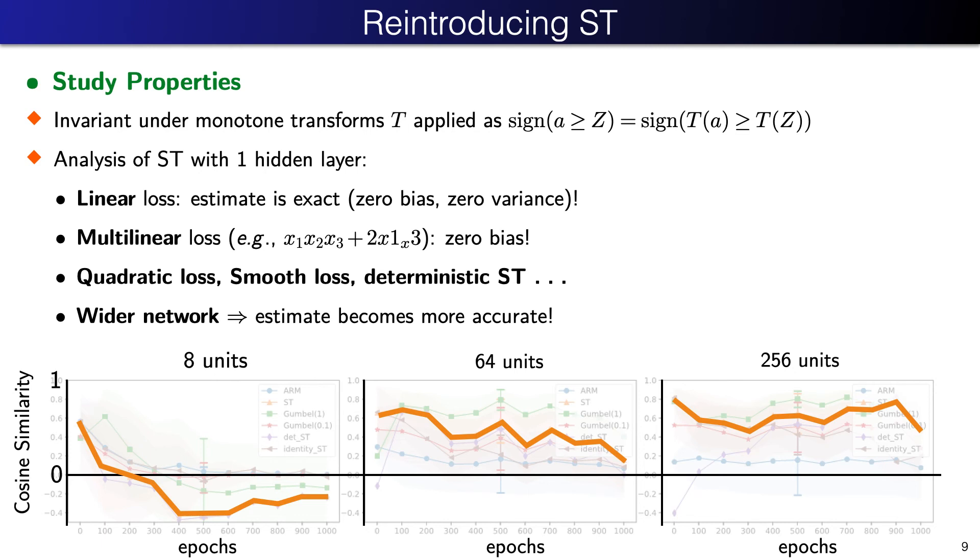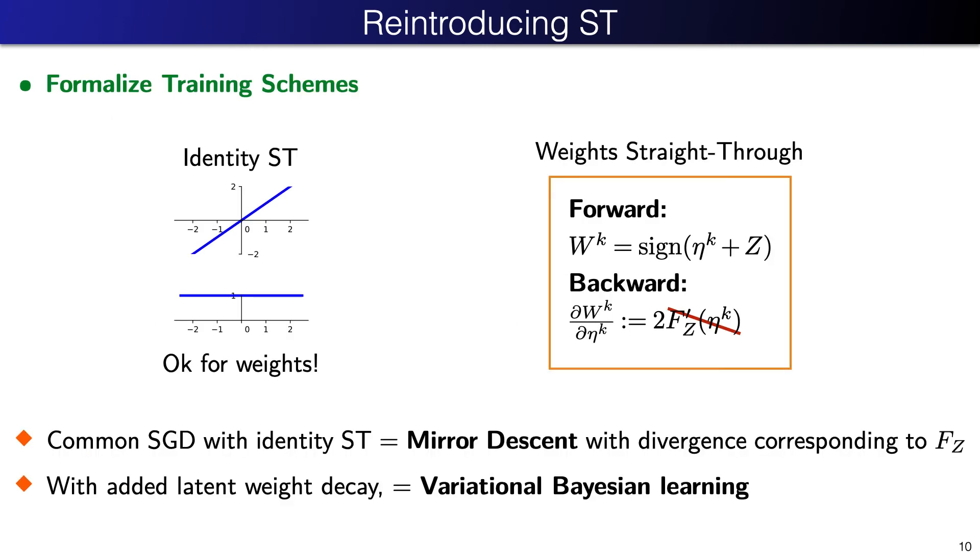However, when we increase the number of Bernoulli units in the autoencoder, the estimation accuracy theoretically improves. This is confirmed in the next two plots, showing better similarity with the true gradient during the whole training.